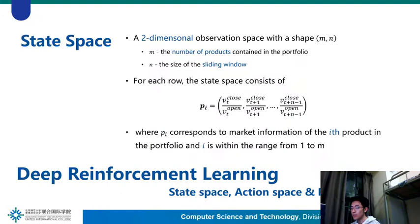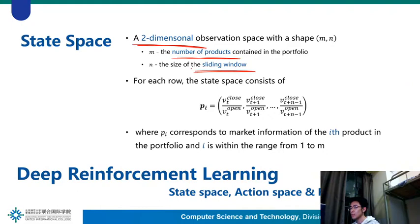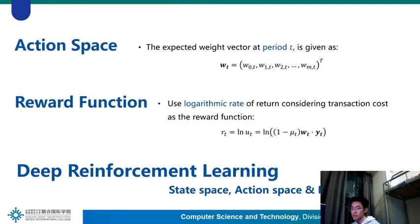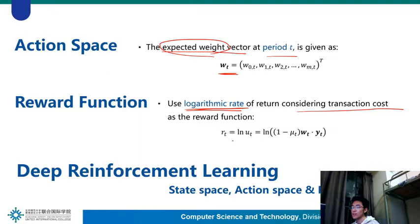We now give formal definitions of terms used in deep reinforcement learning. For state, a two-dimensional observation space is built with shape M×N, where M represents the number of products in the portfolio and N stands for the size of the sliding window. For each row, the state space consists of PI, corresponding to market information of product I. For action, it is the expected weight vector WT at time T. For reward, we use the logarithmic rate of return considering transaction costs as the return function RT.